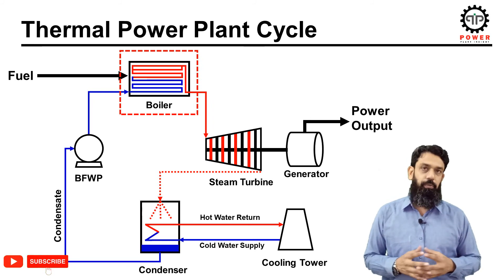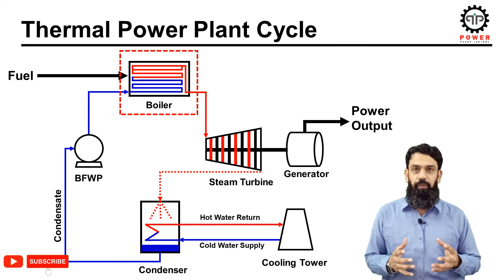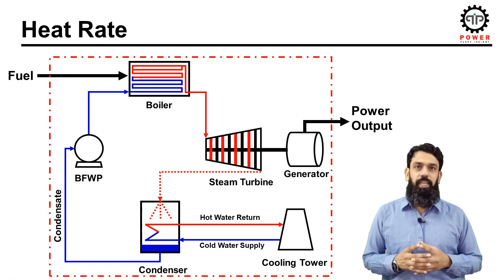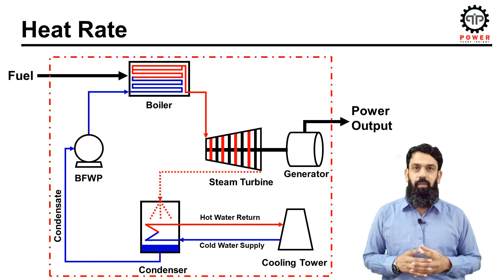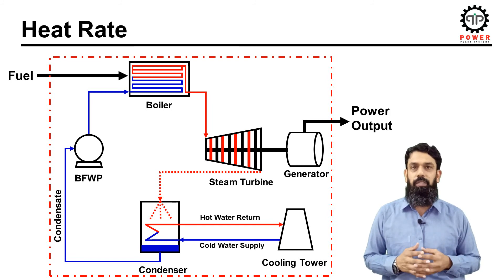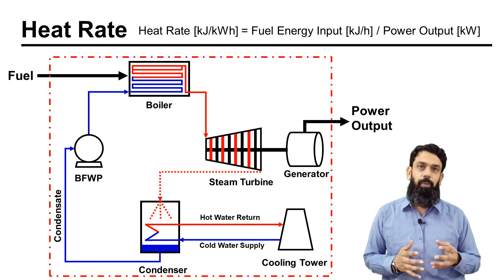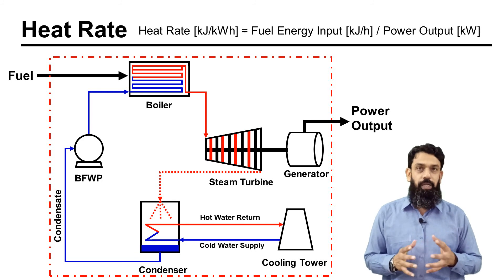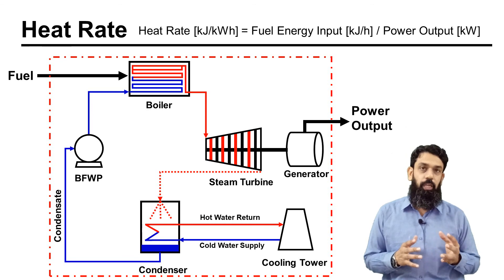During discussion of a thermal power plant, heat rate is a commonly used term. To understand heat rate, we draw an imaginary boundary around the thermal cycle — fuel is used as input and power is obtained as output. Heat rate is the ratio of input to output, or in simple words, the ratio of fuel energy input to power output. Heat rate shows how efficiently a plant converts the heat energy of fuel into electrical energy — meaning kilojoules of energy consumed to generate per kilowatt-hour of electricity.